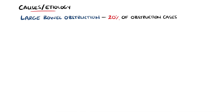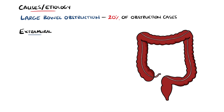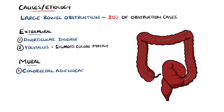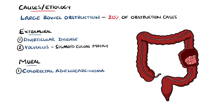Large bowel obstructions make up around 20% of mechanical obstructions. Extramural causes include diverticular disease, involving strictures usually at the sigmoid colon, and also volvulus, which is a twisting of the bowel, again most commonly seen at the sigmoid colon. However, the most common cause overall for a large bowel obstruction is colorectal adenocarcinoma, which is responsible for around 60% of cases.